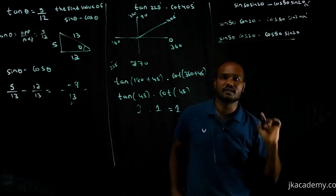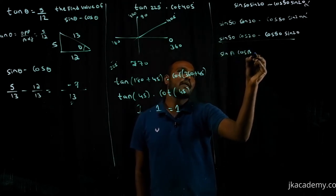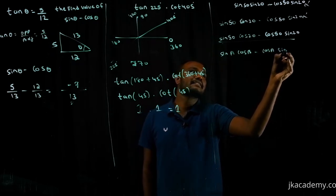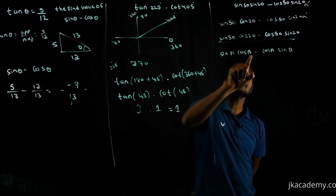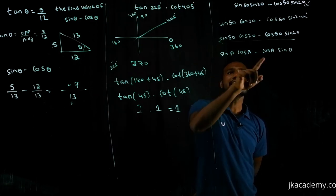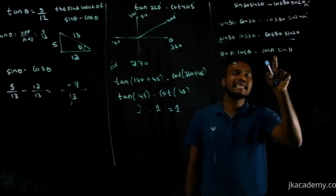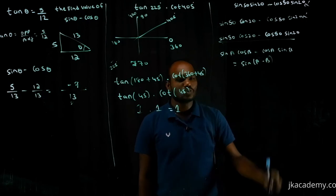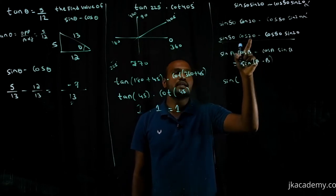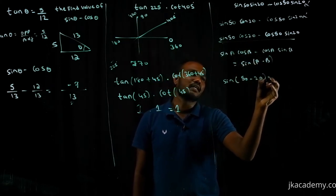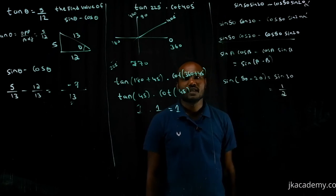This expression looks like sin A · cos B − cos A · sin B. If we consider A = 50° and B = 20°, this matches the formula sin(A − B). So it becomes sin(50° − 20°) = sin 30°. And sin 30° = 1/2. That's the answer.